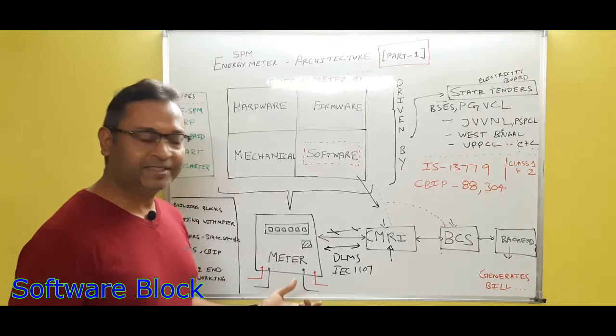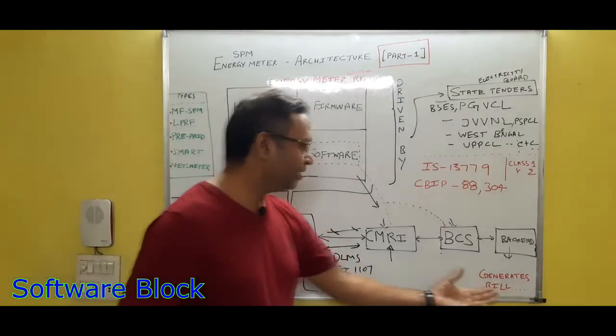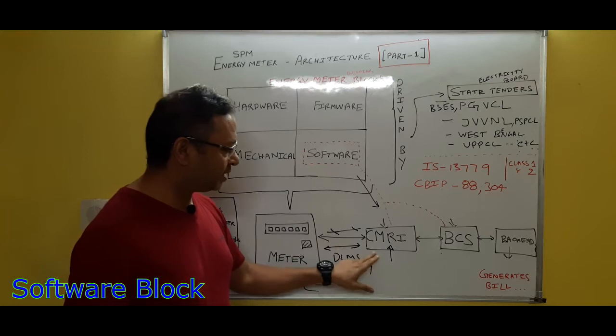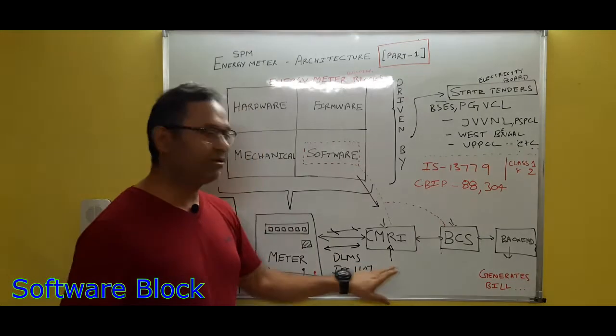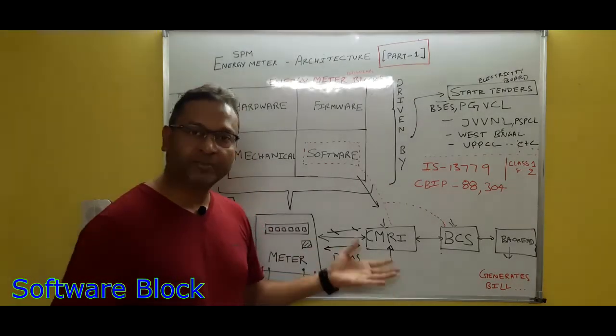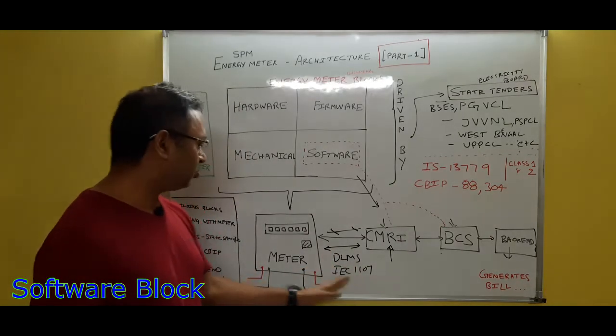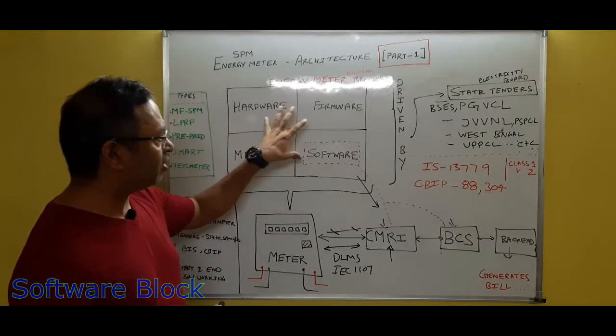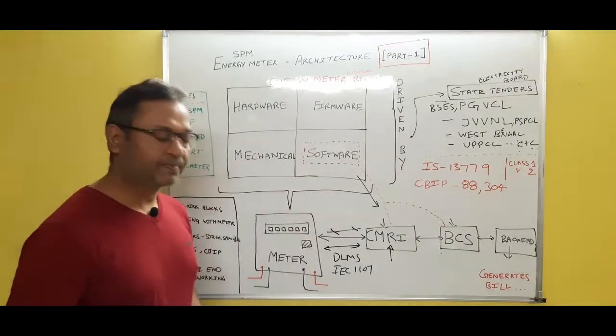This is a kind of a complete chain. Complete chain, I mean to say, you have a meter, then a CMRI unit and the BCS unit, and the back-end software used to generate the bills. So now have some basic understanding about how your meter communicates from starting point to your end point. Now let's talk about the software part. This software part, the software inside the CMRI and the base computer software, is also developed by the manufacturer companies because these softwares may have some proprietary protocol or may have some standard protocols like DLMS or IEC 1107 to communicate with the meter.